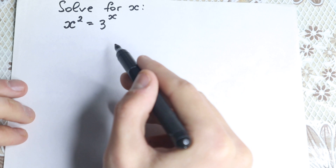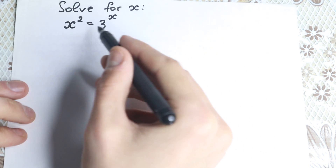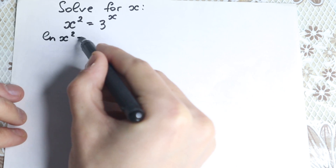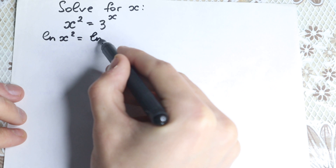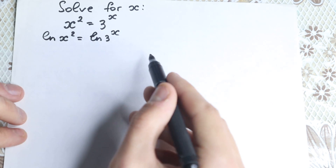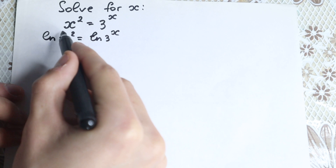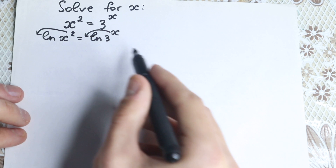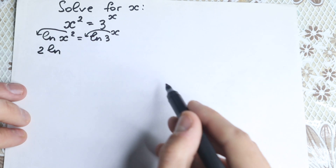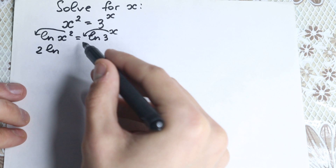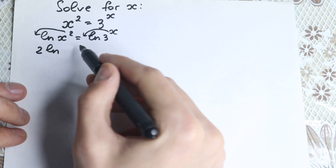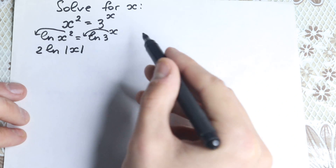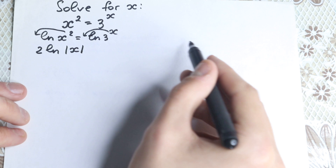First of all, let's take the natural log on both sides, because we have a power, so it's really good to apply log on both sides. So: natural log of x-squared equals natural log of 3 to the x. We apply log because the powers can be brought down. One really important moment: because we have x-squared, let's plug in an absolute value here, since x-squared could be positive or negative — we don't know.